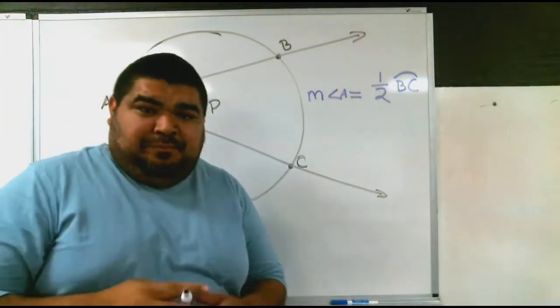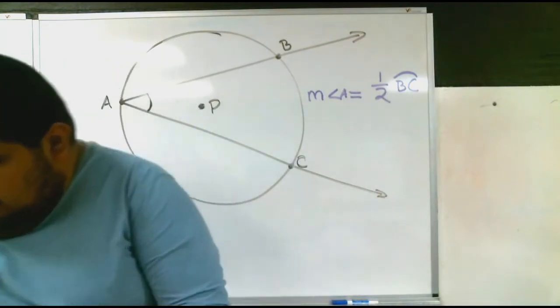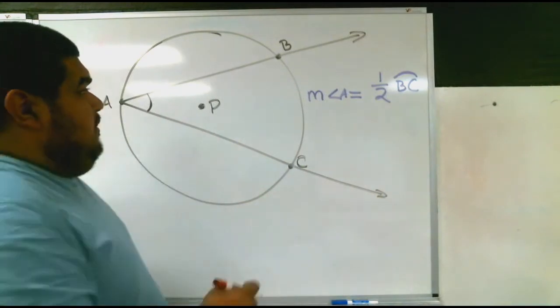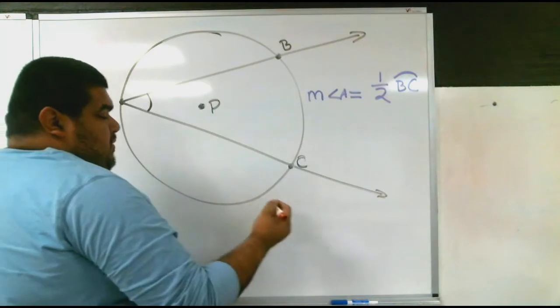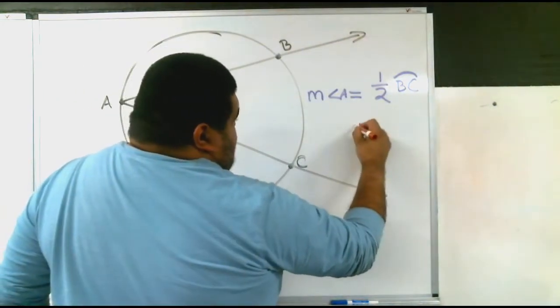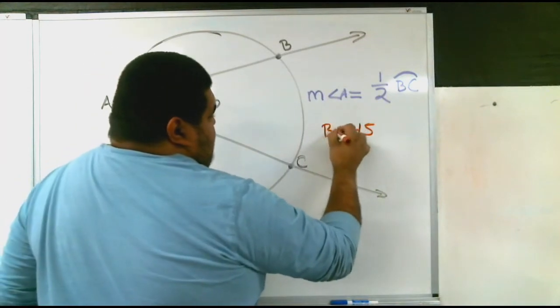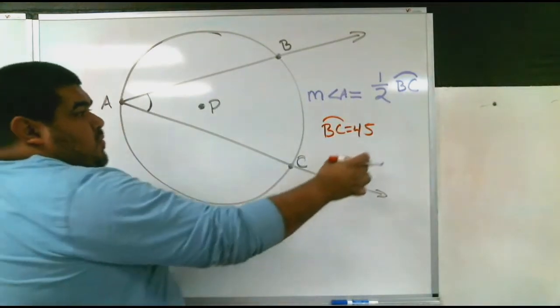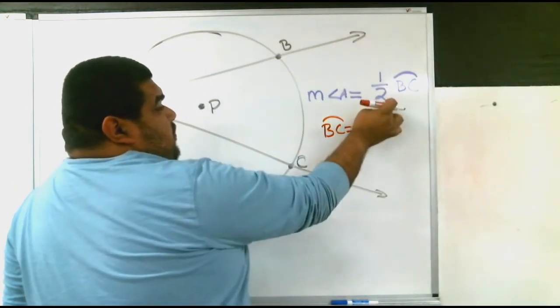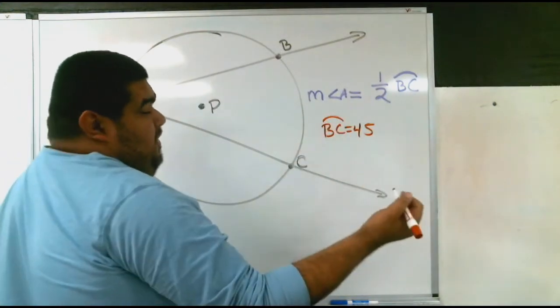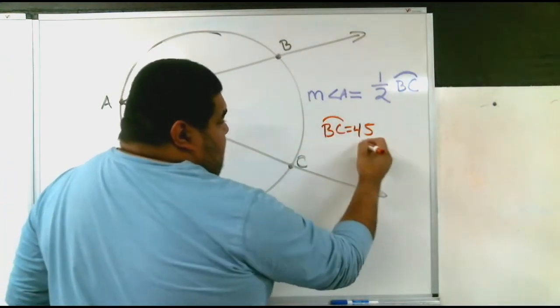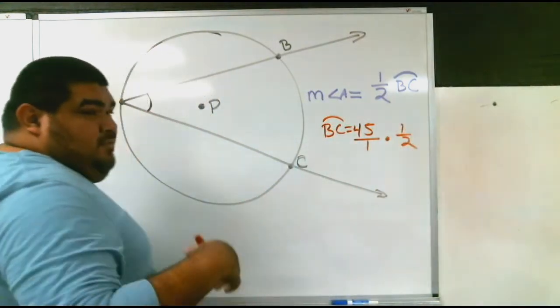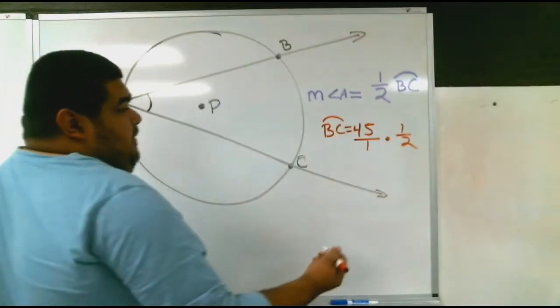For example, very simple. If the arc on the outside BC was 45, we have our arc. We are going to divide it by two or multiply it by one half—either one. If we are just going to divide it, just cut 45 in half. It is still the same thing.